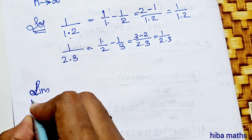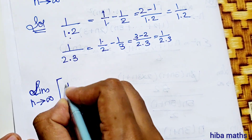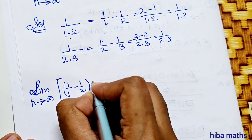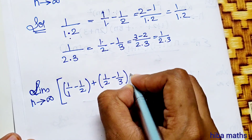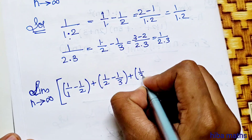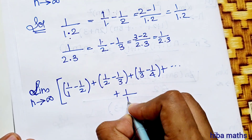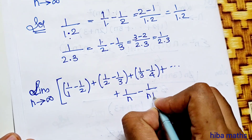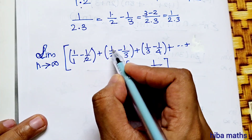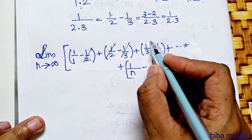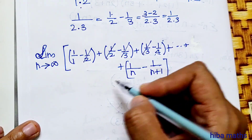Limit as n turns to infinity: (1 by 1 minus 1 by 2) plus (1 by 2 minus 1 by 3) plus (1 by 3 minus 1 by 4), continuing up to (1 by n minus 1 by n plus 1). This is a telescoping series — the intermediate terms cancel: minus 1 by 2 plus 1 by 2, minus 1 by 3 plus 1 by 3, minus 1 by 4 plus 1 by 4, and so on.